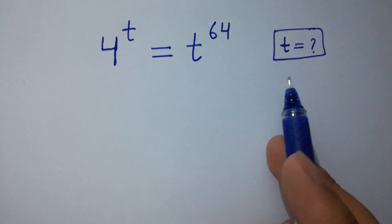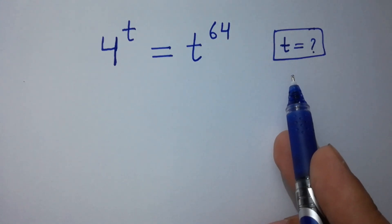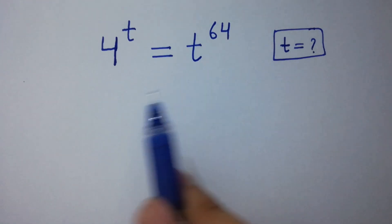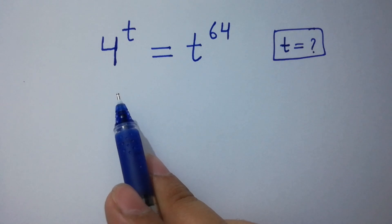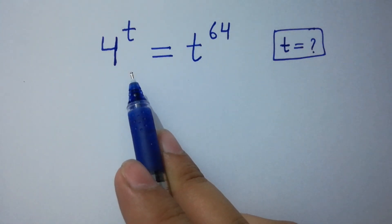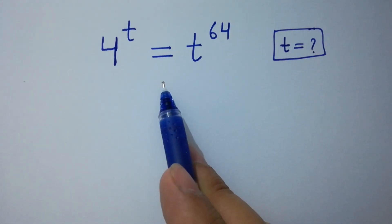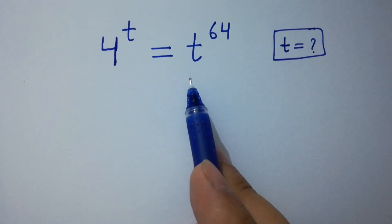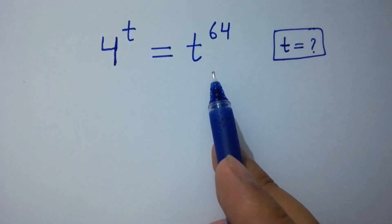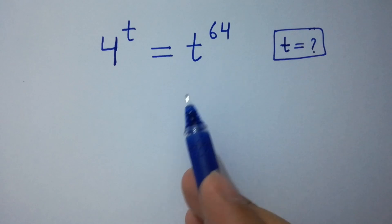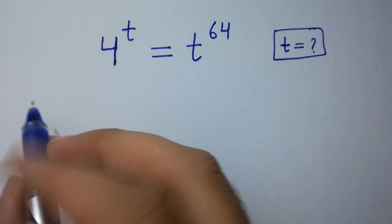Hello friends. Find the value of t if 4 to the power t equals t to the power 64. Let's have a solution.